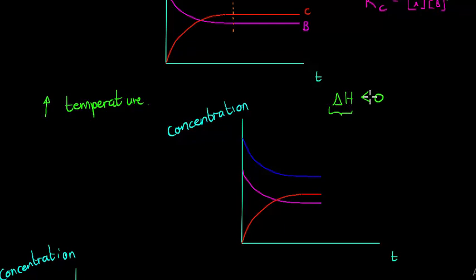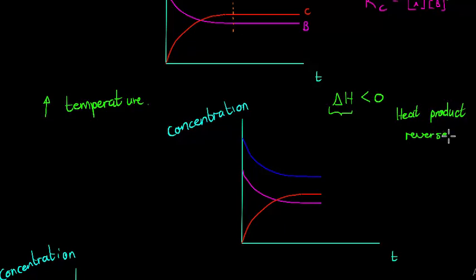For an exothermic reaction, heat is a product. So if I increase the temperature I am adding products to the system, which favors the reverse reaction. Favoring the reverse reaction means I will end up with a higher concentration of reactants and a lower concentration of products. Both reactants A and B will increase in concentration.